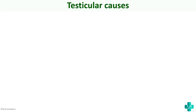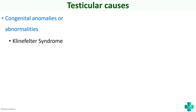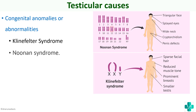Next are testicular causes. Testicular causes can be due to congenital anomalies or abnormalities, especially in the case of Klinefelter syndrome or Noonan syndrome. In Noonan syndrome, which is a congenital anomaly, the specific features include a triangular face, splayed eyes, wide neck, cryptorchidism, as well as penile defects.